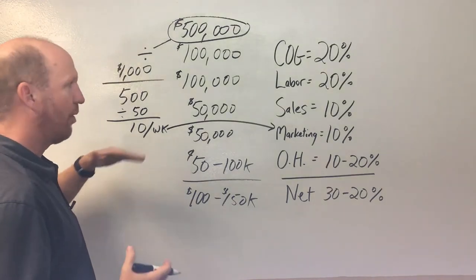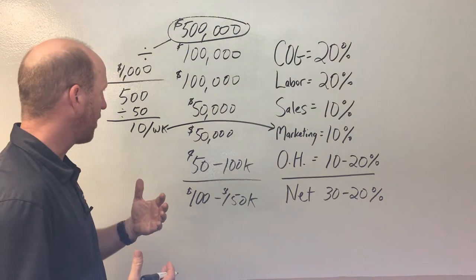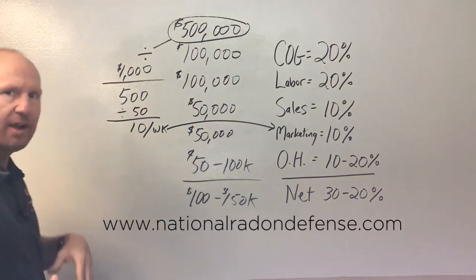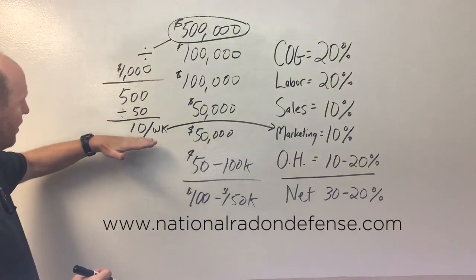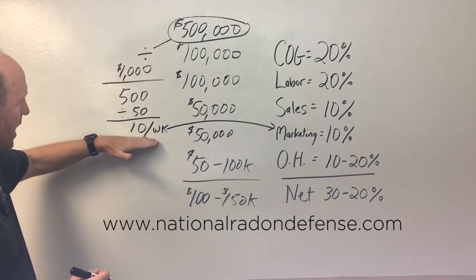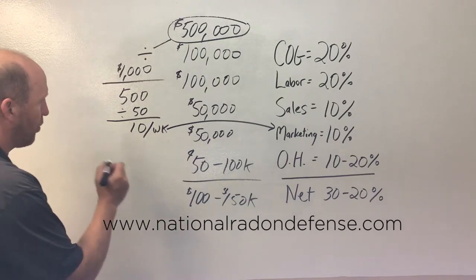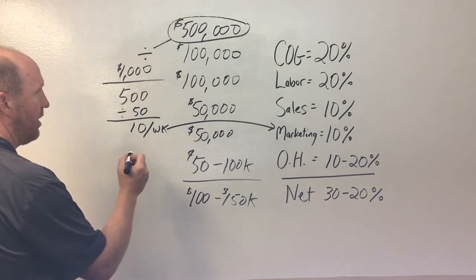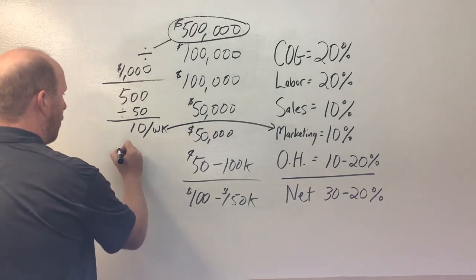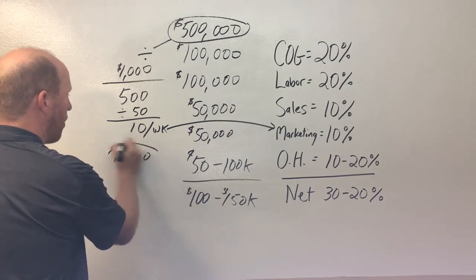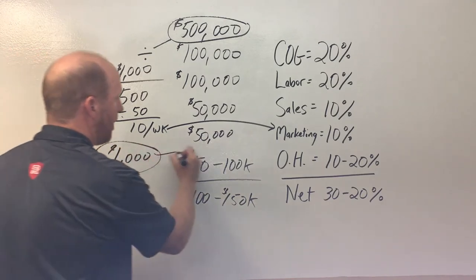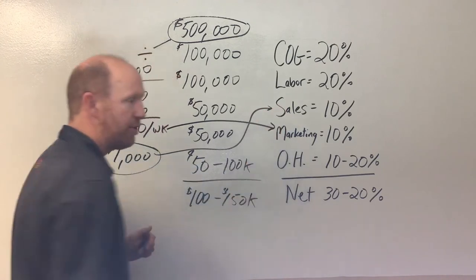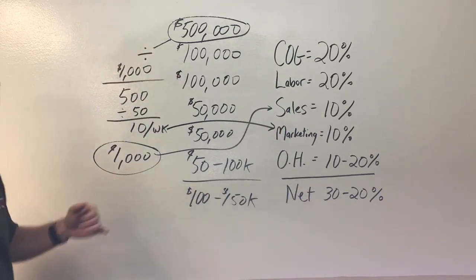And so now we know what we need to do from a marketing standpoint. So then let's take it another step further here. So we've got this 10 leads per week. And now with that 10 leads per week, we need our sales team then to generate that $1,000 ADL, right?